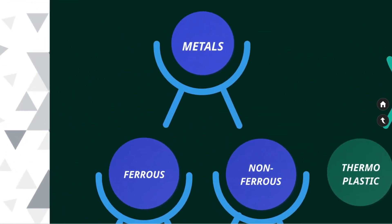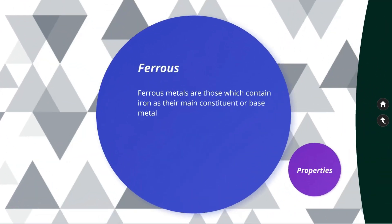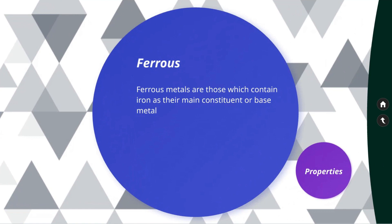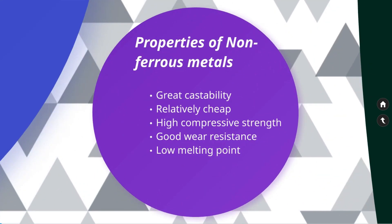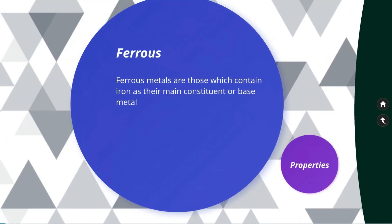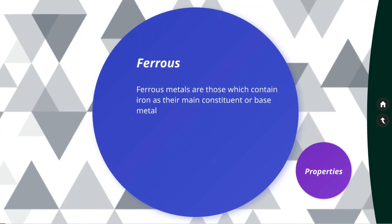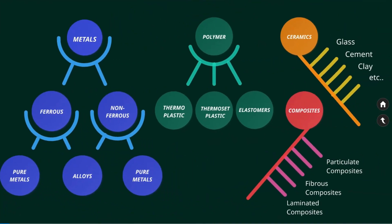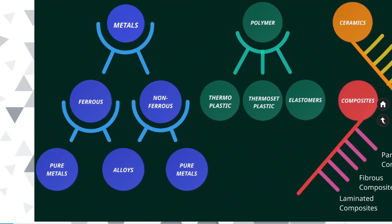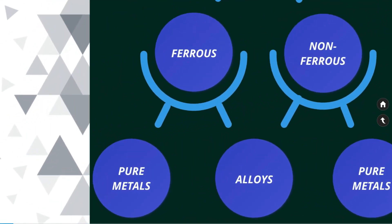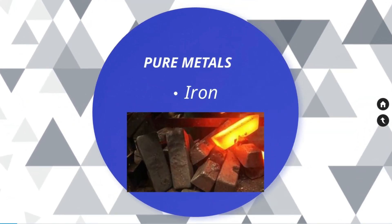Metals are further classified into ferrous and non-ferrous metals. Ferrous metals are those which contain iron as their main constituent or base metal. Ferrous metals have great castability, high compressive strength, good wear resistance, low melting point, and are also available at a relatively low cost. Ferrous metals are again available in pure metal form or alloy form.